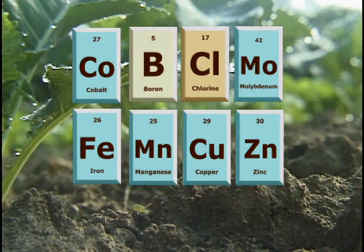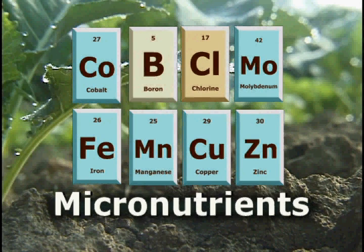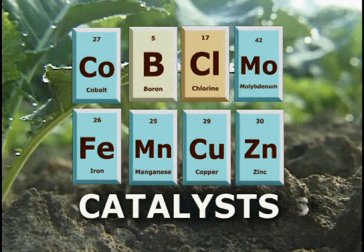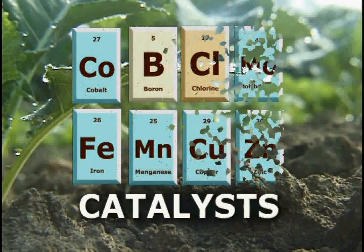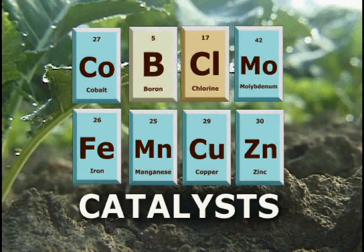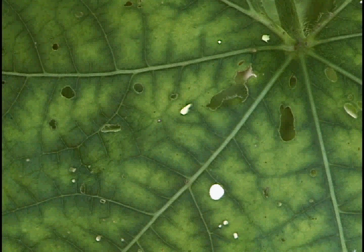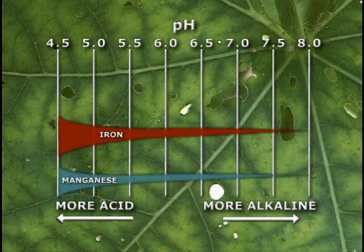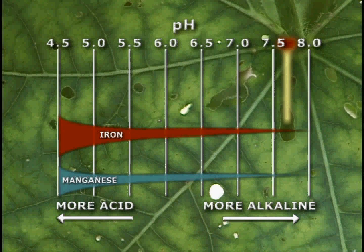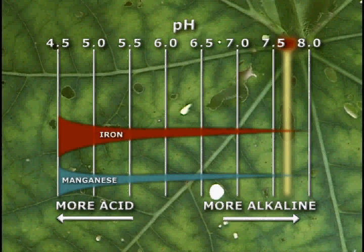The plant essential micronutrients play similar roles as catalysts and regulators of important chemical reactions within plants. Catalysts are not consumed during chemical reactions, which is part of the reason why micronutrients are needed in such small quantities. Intravenal chlorosis in combination with high soil pH levels often indicates a deficiency in one or more of the metal micronutrients. In this case, iron, manganese, copper, or zinc may be unavailable to the plant.